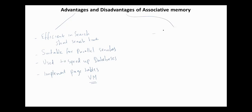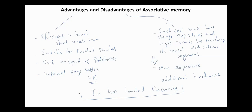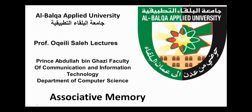The disadvantages of associative memory are: each cell must have storage capabilities and logic circuits for matching its contents with an external argument, meaning associative memory is more expensive since it requires additional hardware. Even in applications that use associative memory, it usually has limited capacity. It is very expensive and difficult to design associative memory with large capacity. For today that's all. Thank you.